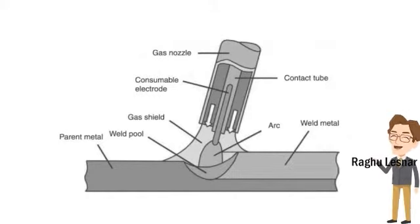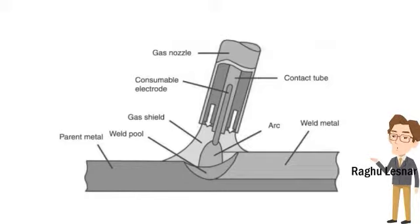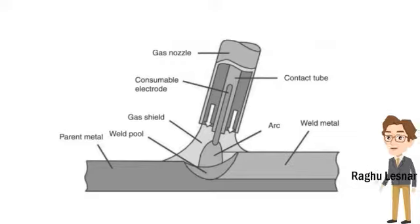Metallurgical compatibility is required to prevent cracking in the heat affected zone or in the base metals, and to produce a microstructure in the weld zone that can provide adequate joint performance and corrosion resistance.